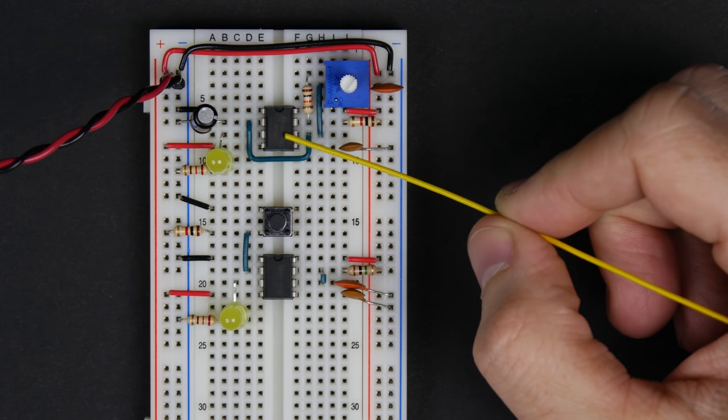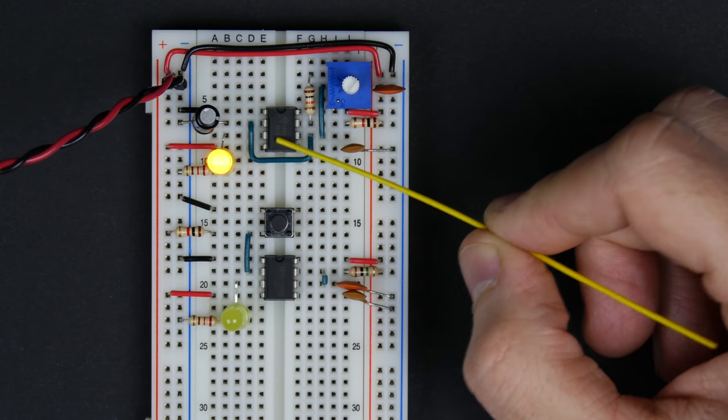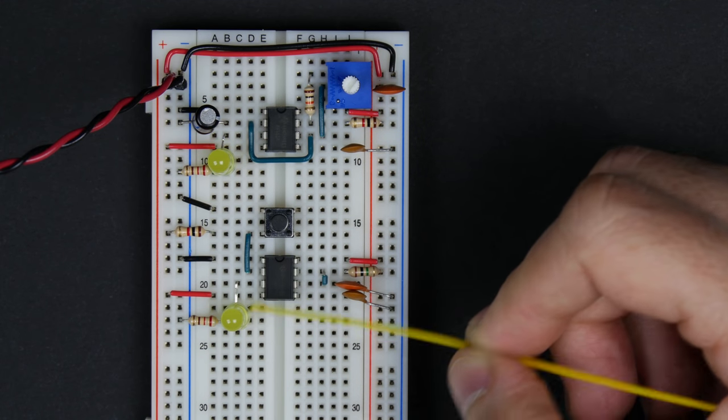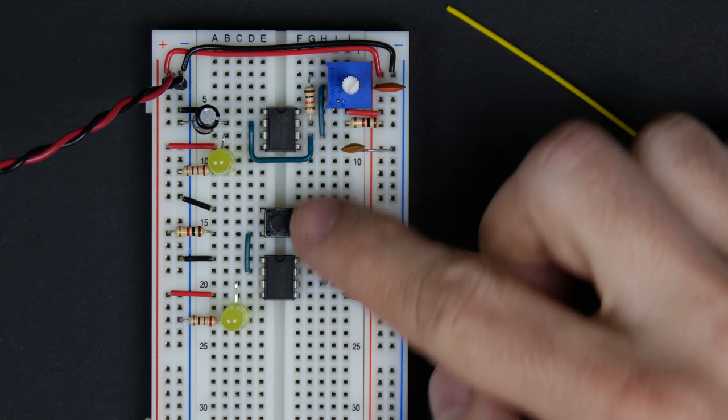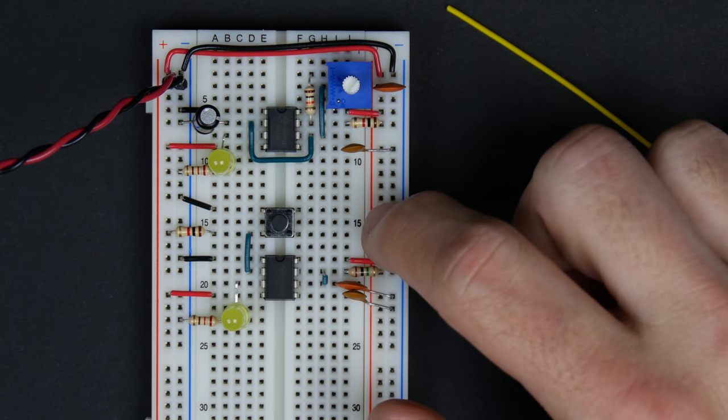So in the last two videos, we used these 555 timers to build an astable circuit with the pulsing output and a monostable circuit that's normally off, but when we push the button, it turns on and it's debounced so that we get a single clean output when we push the button.